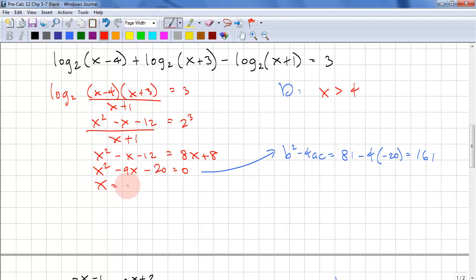x = -b, so that's -(-9) ± √(discriminant). And we've already calculated the discriminant. All over 2a, that's just 2(1). So we have (9 ± √161)/2.